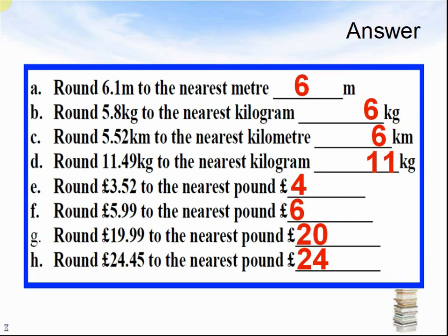The answers are: a. 6.1 metres rounds to 6 metres. b. 5.52 kilometres rounds to 6 kilometres. h. 24.45 pounds rounds to 24 pounds. Let's look at the next question.